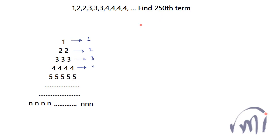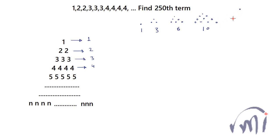If you remember, we have learned about triangular numbers, where the first triangular number is 1, the second triangular number is 3, and if I add three dots like this, this becomes the third triangular number which is 6. So we have 1, 3, 6, and then the fourth triangular number is 6 plus 4 = 10, and the fifth triangular number is 10 plus 5 = 15.